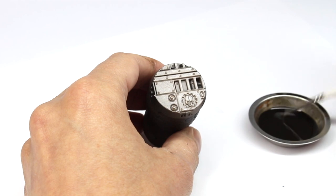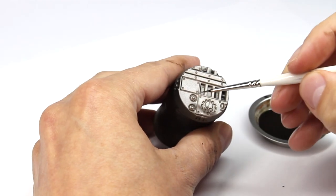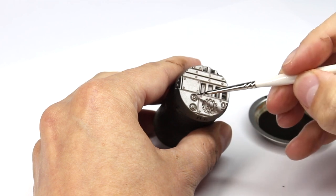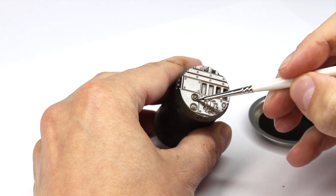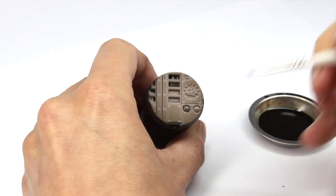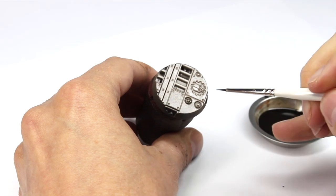So we take the base, load our brush with the wash, touch off any excess and begin to carefully paint in the details. And you can see just like the contrast was better than the Agrax Earthshade, the enamel wash is flooding into those details even better than the contrast paint was.